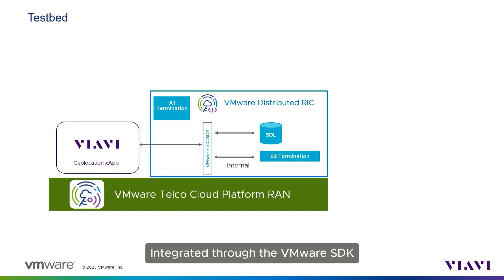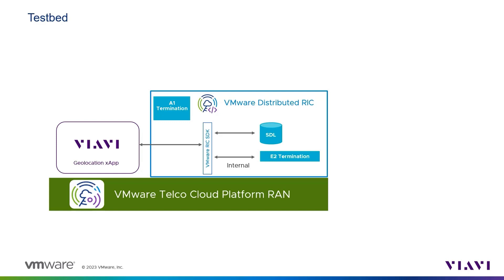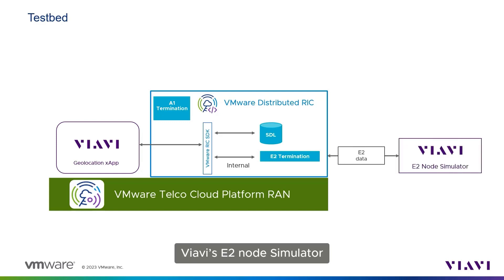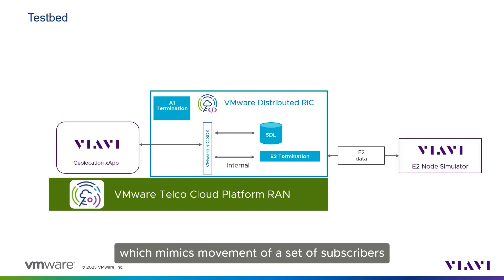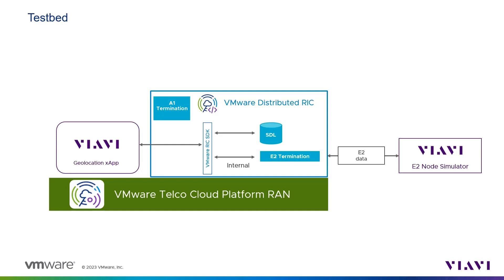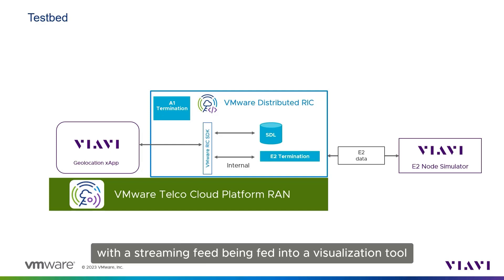Integrated through the VMware SDK, we have VIAVI's Geolocation XApp. VIAVI's E2 node simulator simulates a network deployment scenario which mimics movement of a set of subscribers. Lastly, our testbed is completed with a streaming feed being fed into a visualization tool.